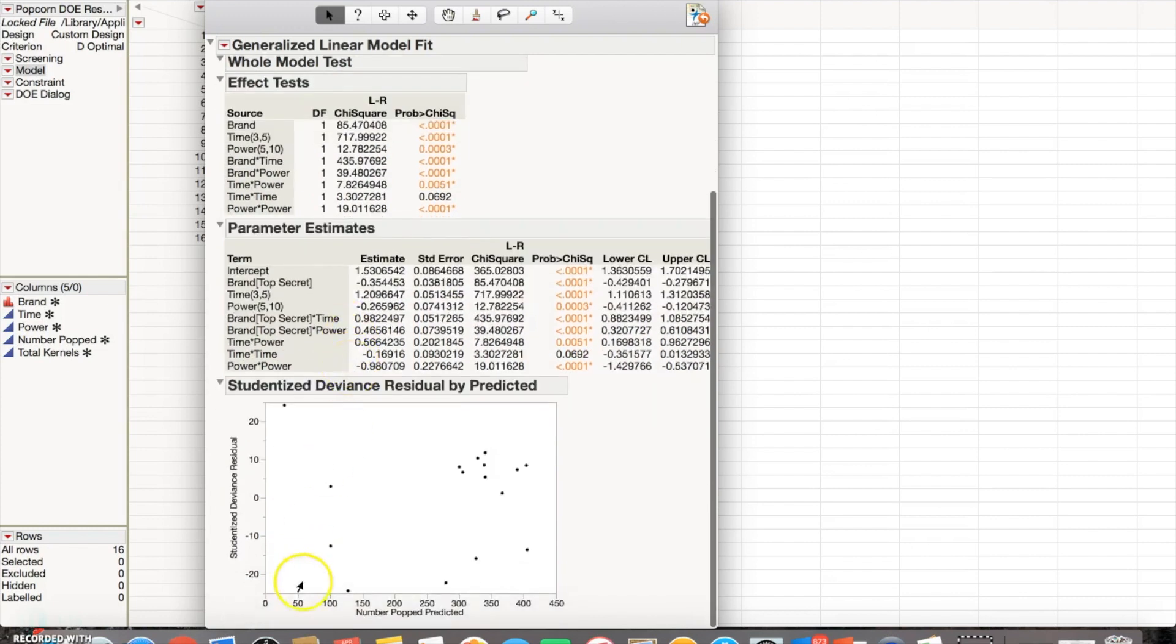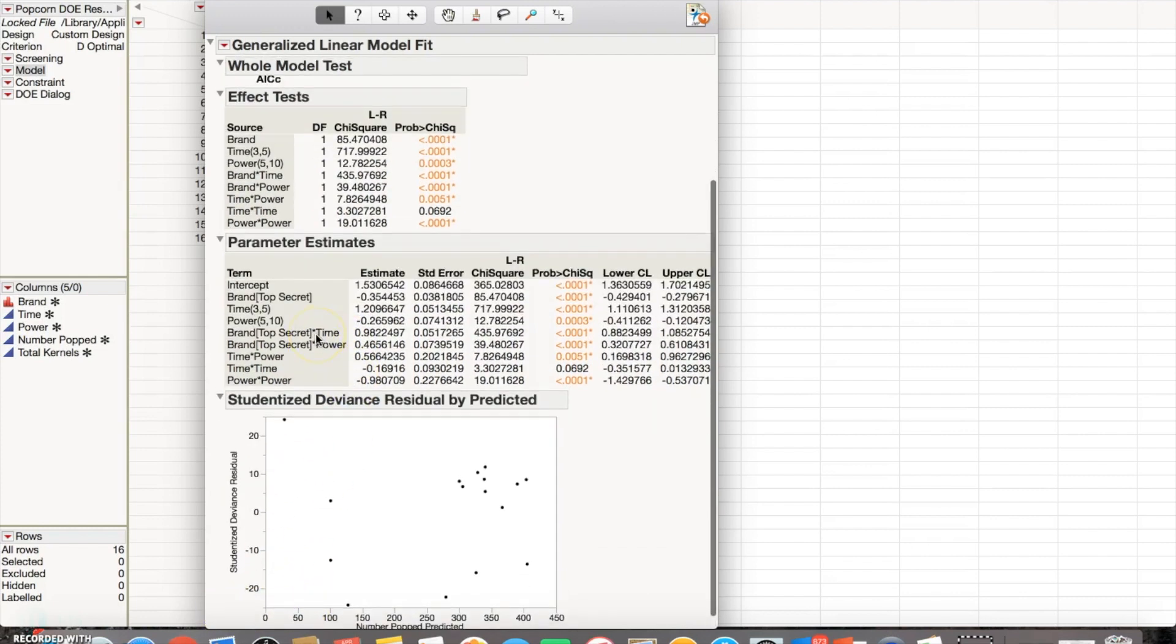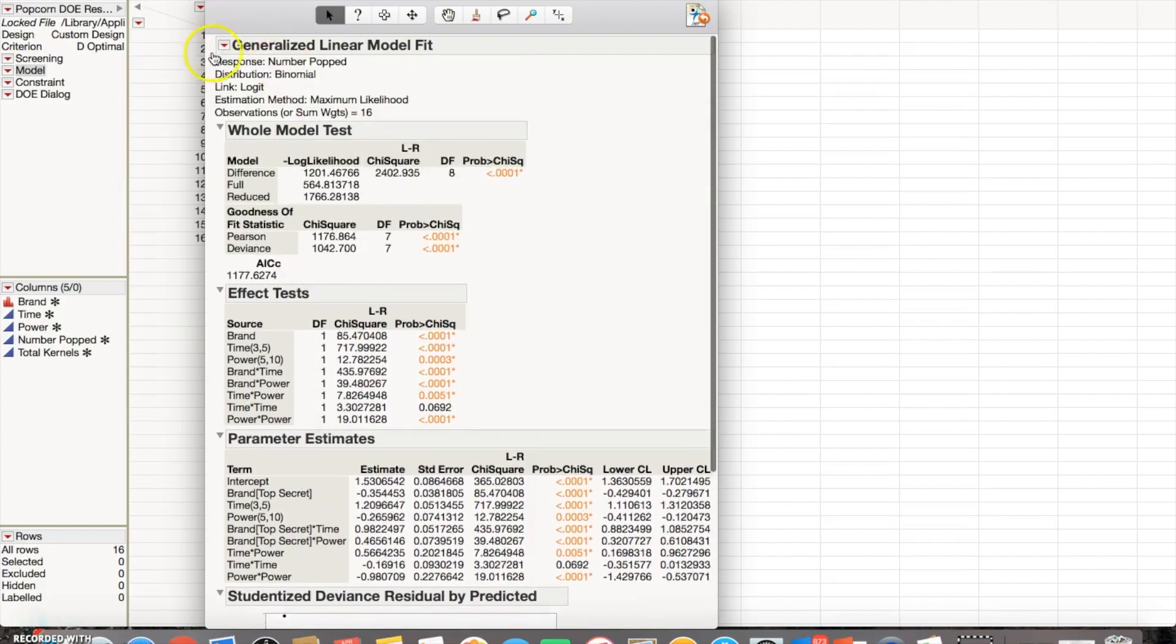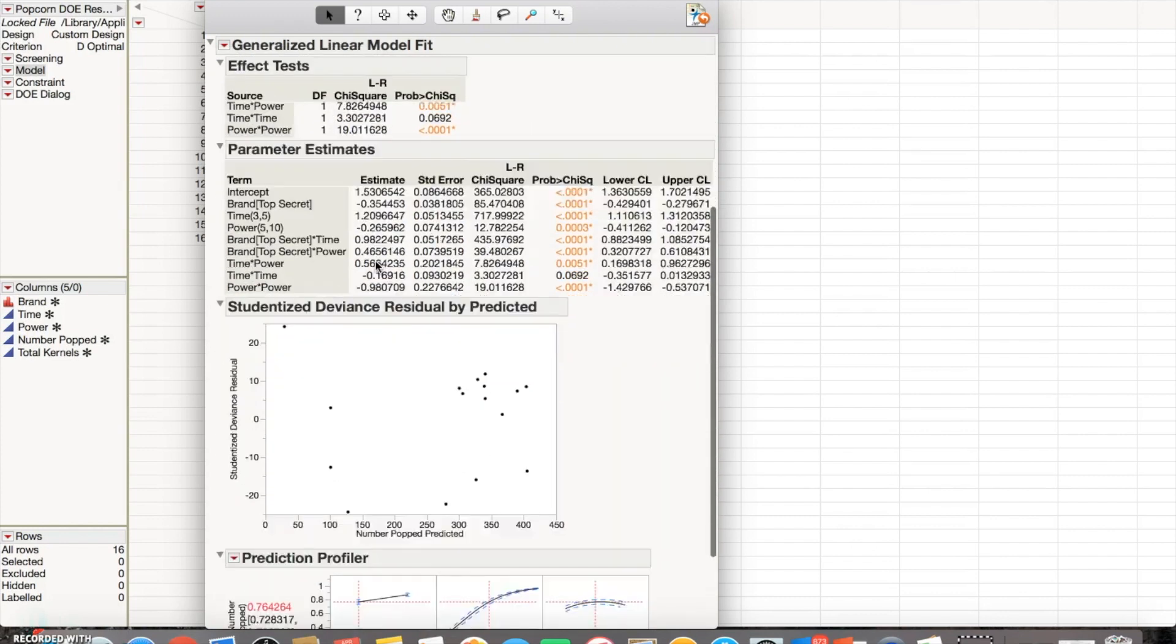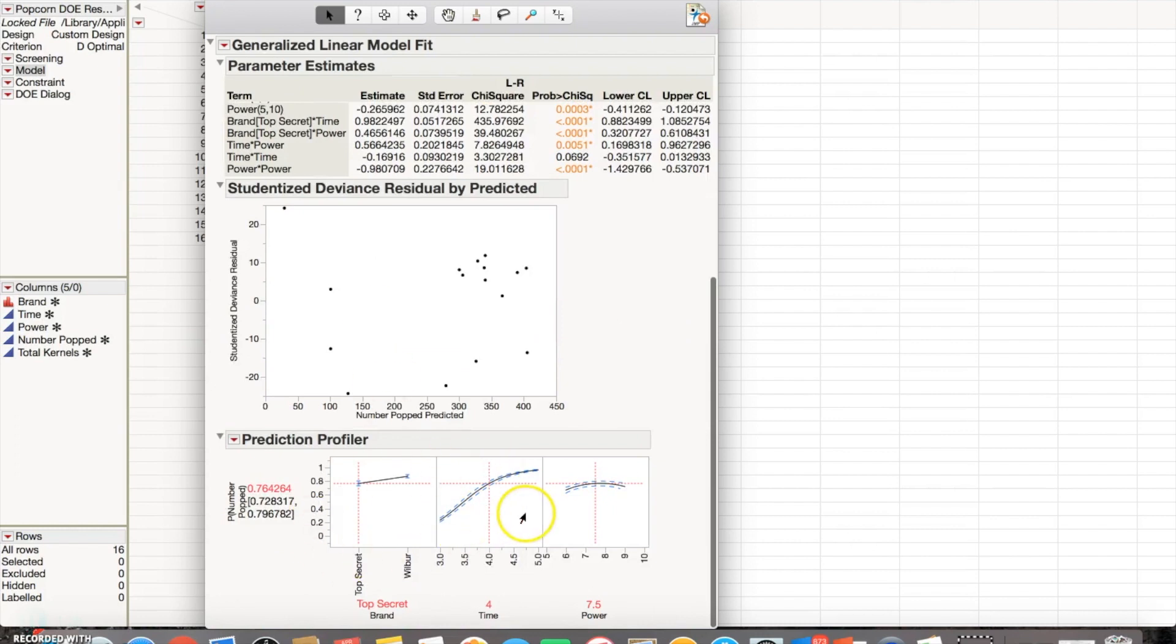If we go down further, there's no graph for the profiler that we talked about earlier. So I'm going to go up here to this red arrow and click profiler, and then scroll down again and it pops up right here. These are giving a generalized understanding of what our better numbers would be—the number popped with these particular ranges. So this particular brand, Top Secret, a time of 4 and power of 7.5.